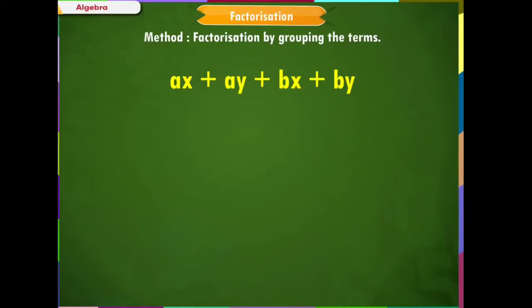In this problem, we see that the first and the third term has common factor x, and the second and the last term has a common factor y. We group the like terms: ax + bx + ay + by.